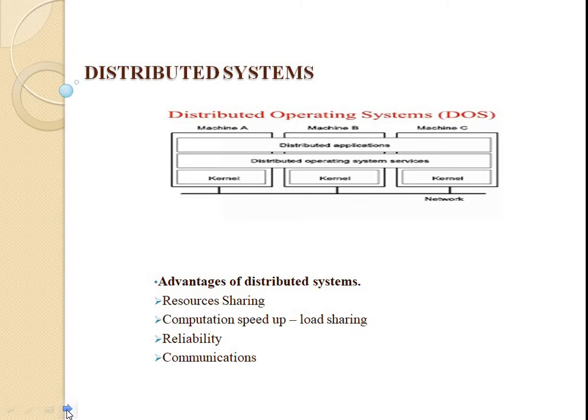The next one is the distributed system. This type of operating system is a recent advancement in computer technology and is being widely accepted all over the world. Various autonomous interconnected computers communicate with each other using a shared communication network. Independent systems possess their own memory unit and CPU. These are referred to as loosely coupled systems or distributed systems. A major benefit is that one user can access files or software not present on his own system but on some other system connected to the same network, so remote access is enabled. The advantages of distributed systems include resource sharing, computational speed-up, load sharing, reliability, and communication.